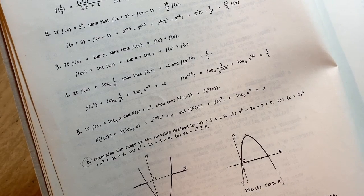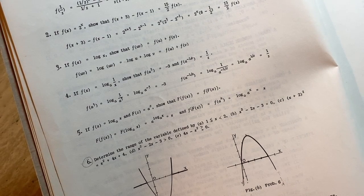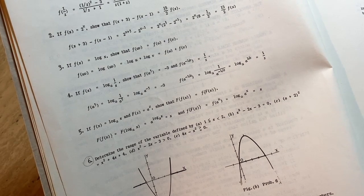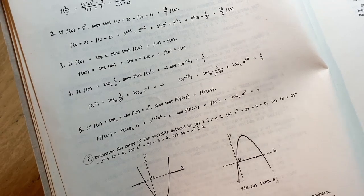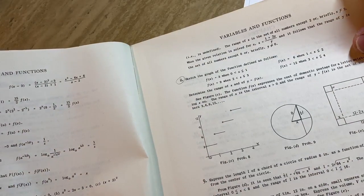Oh, this is a little bit harder. Number two, f of x equals 2 to the x. Show that f of x plus 3 minus f of x minus 1 is equal to 15 halves times f of x. That's pretty cool, right? And they do the problem there. Pretty cool stuff. Pretty cool examples. They look kind of fun, actually. And variables and functions. Cool.